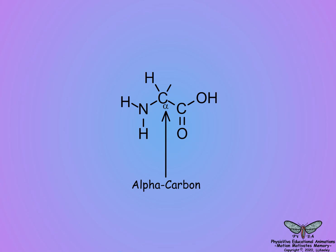In addition, the alpha carbon also has chemically distinct side groups, indicated by the letter R, that contribute unique chemical properties to each amino acid, such as being acidic or basic, hydrophobic or hydrophilic.